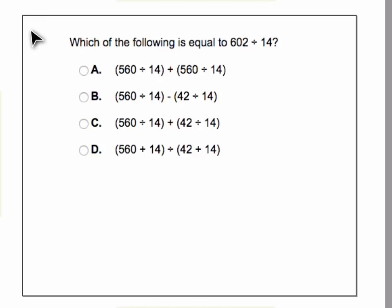First, let's break down what these problems are looking like. Our problem is 602 divided by 14. In option A, we have 560 divided by 14, and then 560 divided by 14 again, and we're adding those together.